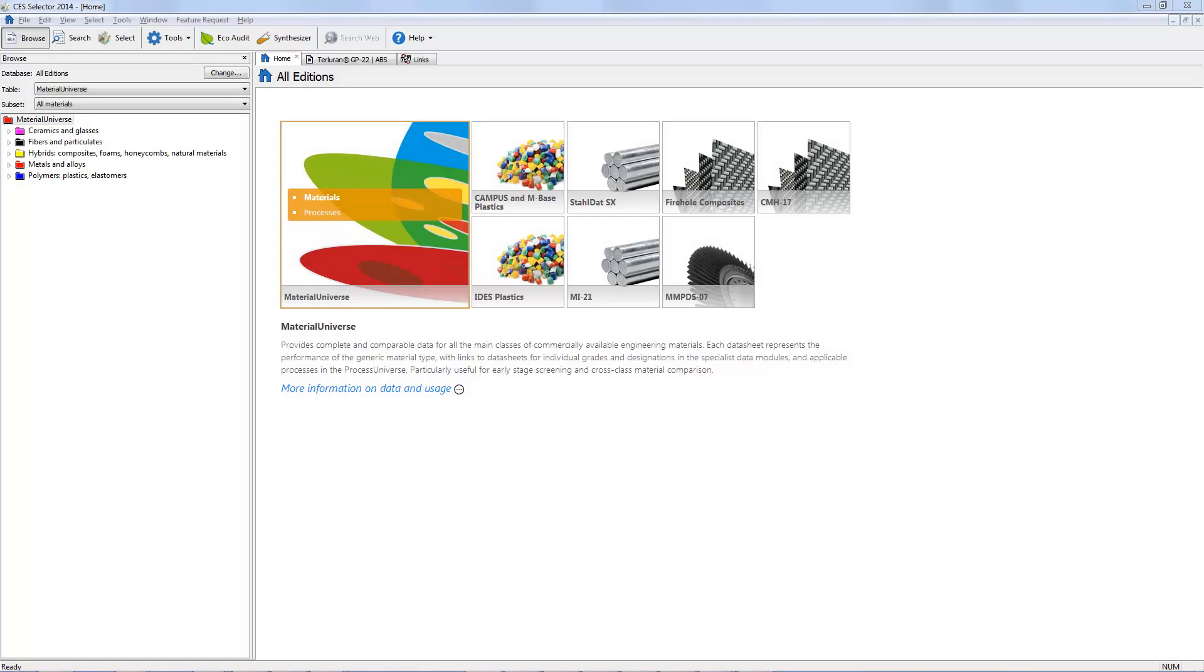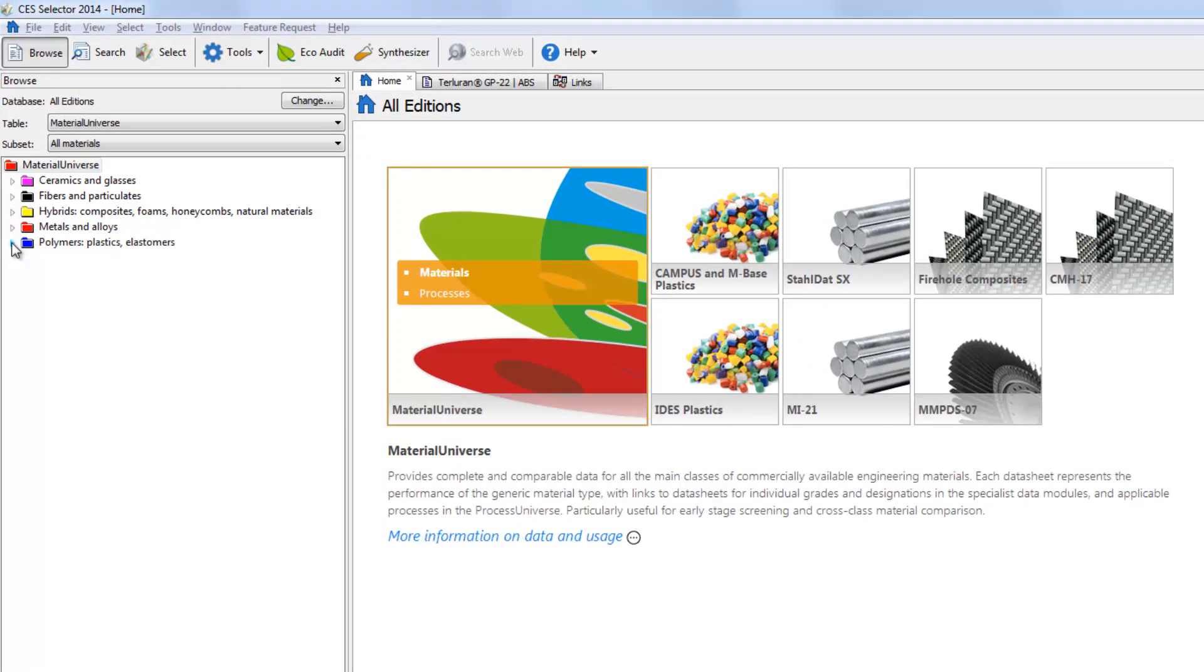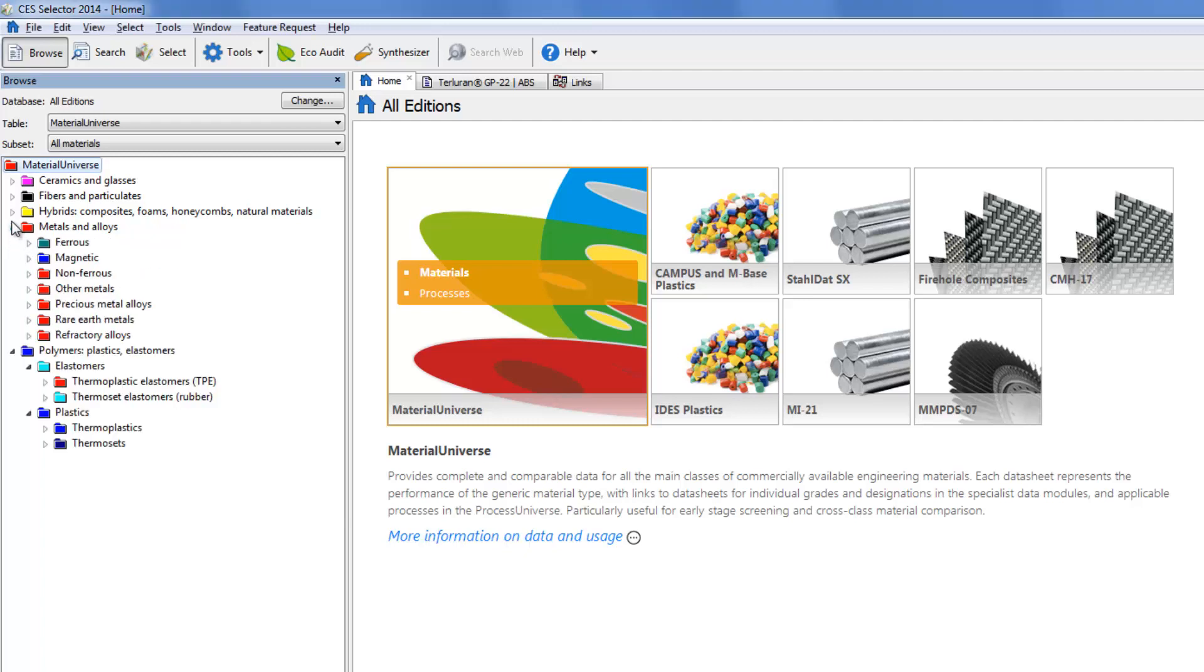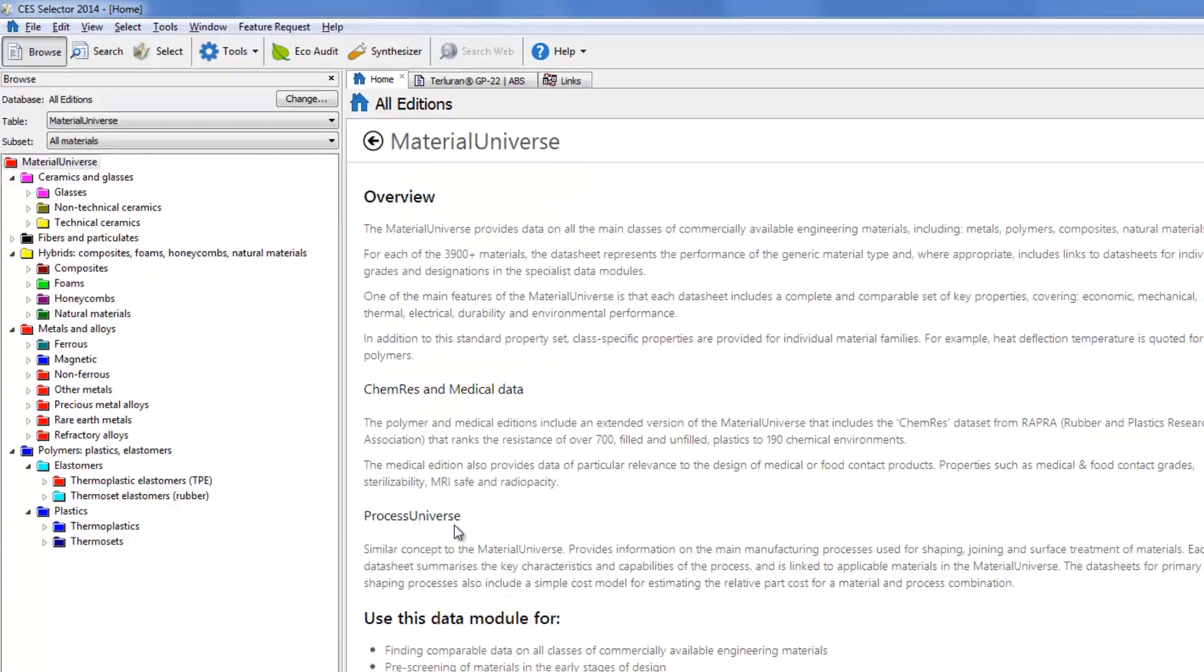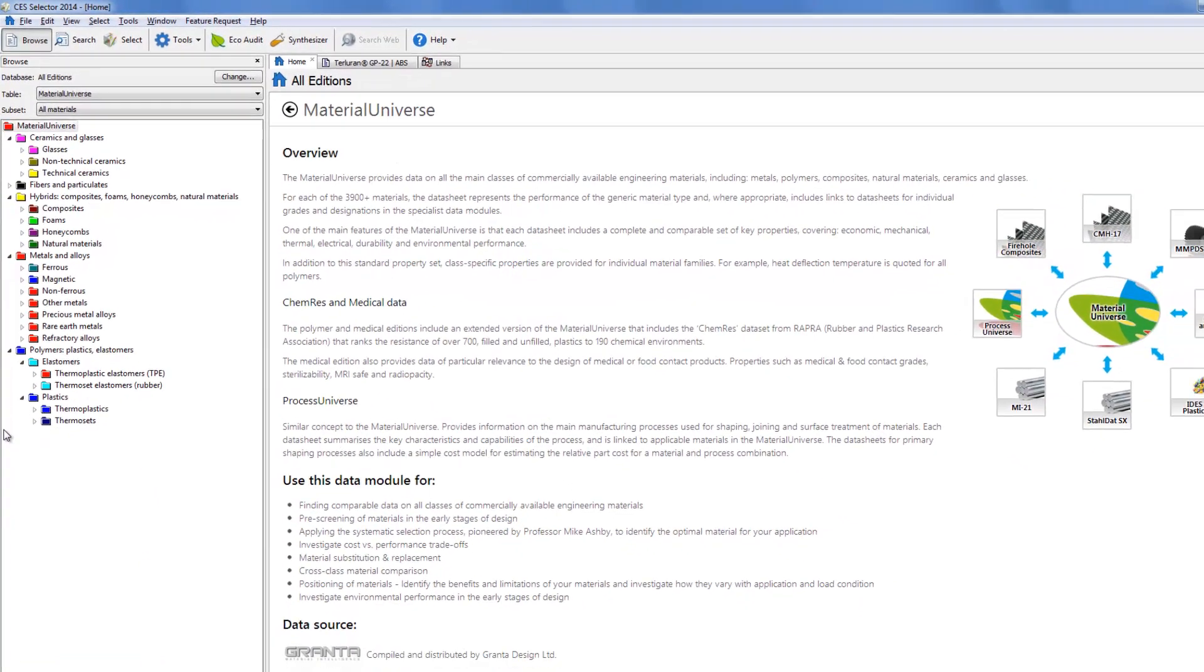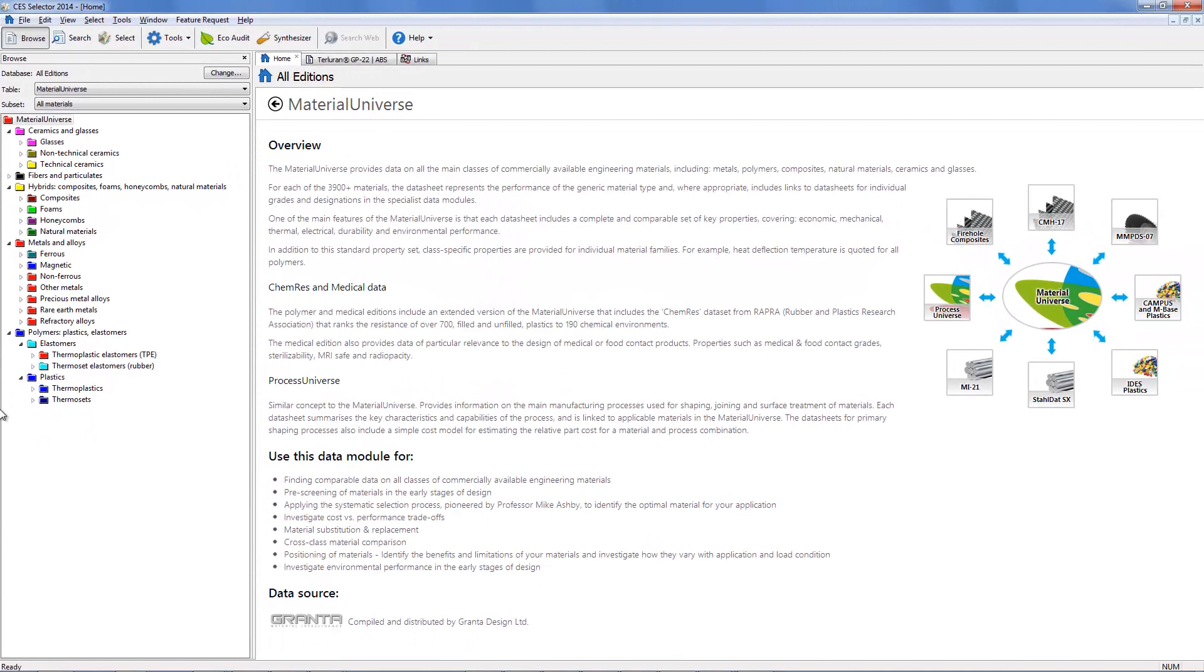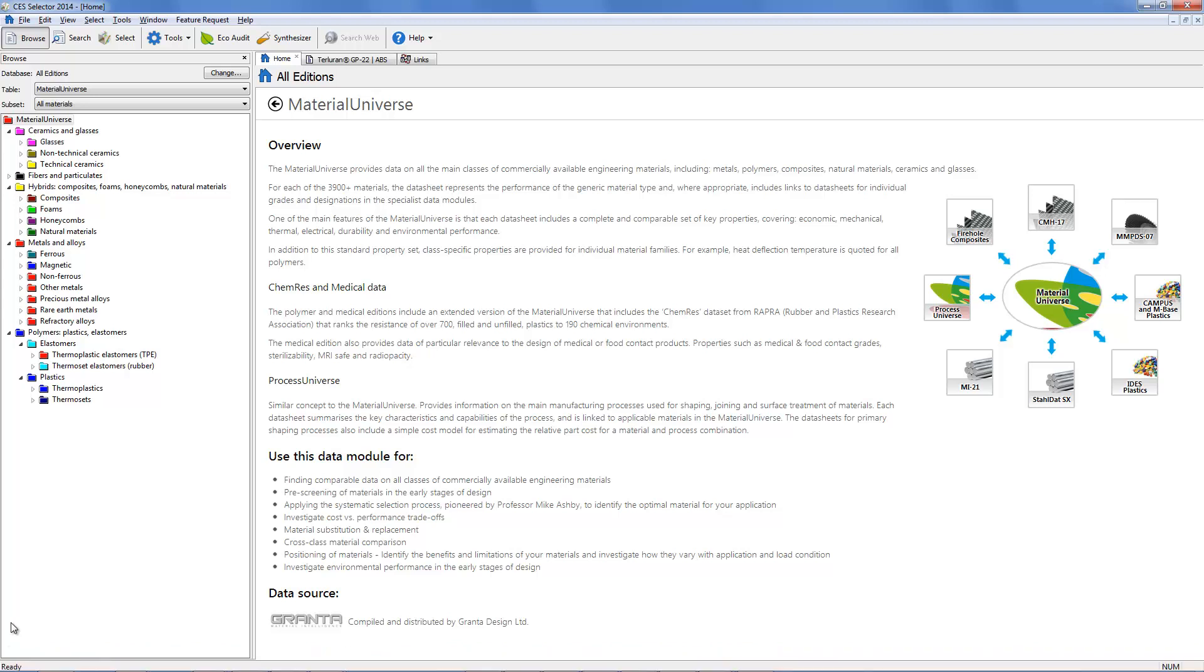At the heart of CS Selector is the Material Universe dataset, covering all classes of engineering materials, including polymers, metals, composites, natural materials, and ceramics. There are over 3,000 datasheets, each representing the performance of a generic grade of material. Material Universe is unique in quoting a complete and comparable set of properties for this comprehensive range.